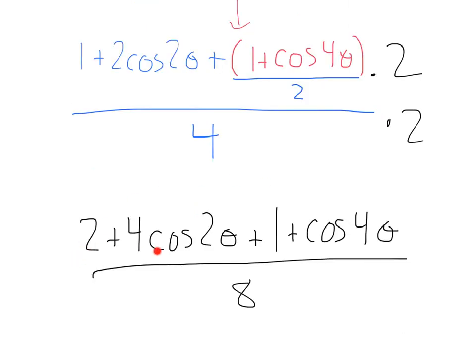Doing that, we'll get 2 plus 4 cosine 2 theta plus 1 plus cosine 4 theta all over 8. Notice, this 2, of course, had to distribute across. It canceled here. And then, this 4 times 2 just gave us an 8.